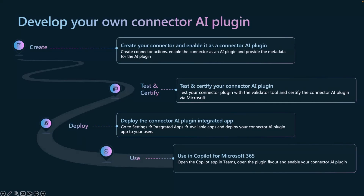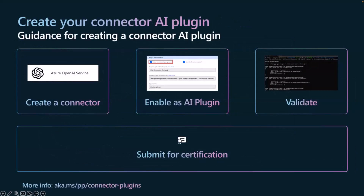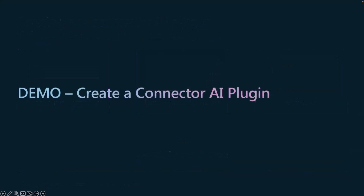So it's a couple of steps: you create the connector, you enable it as the AI plugin — as you can see in the screenshot in the middle, it's just a checkbox you enable for the action you want. Then you validate it, checking that the right operations get triggered. And when you're ready, you can submit for certification. I've already been talking a lot about it — let's move on to a demo.